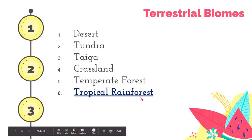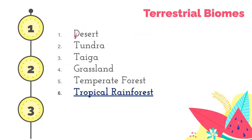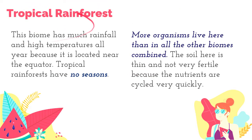The last type of terrestrial biome is the tropical rainforest. This biome has much rainfall all throughout the year, and it has high temperature because it is located near the equator — that's why it's called tropical, along the tropic region of the globe. Tropical rainforests have no seasons, but it is important to note that more organisms live here than in all the other biomes combined — even if you combine all the species found in all the previously discussed terrestrial biomes, there are more organisms found in the tropical rainforest.